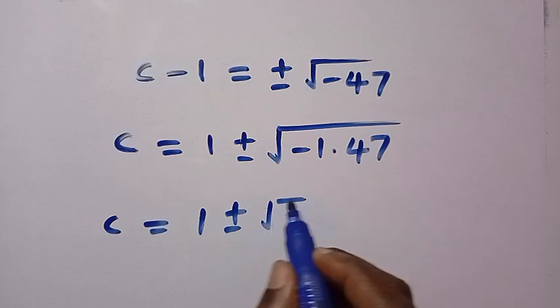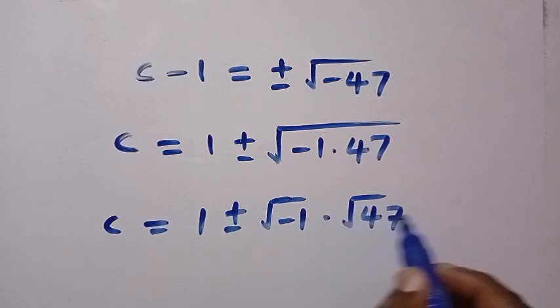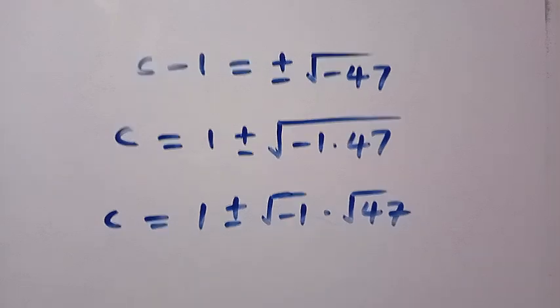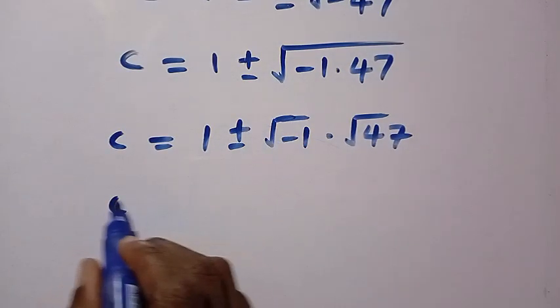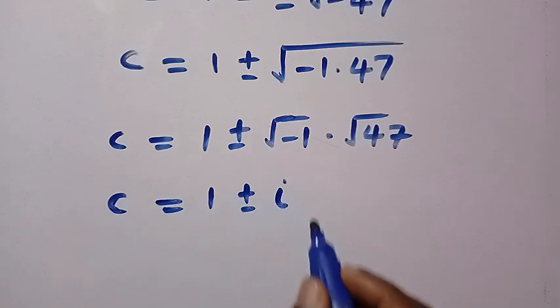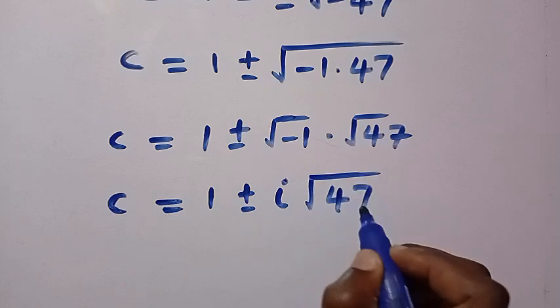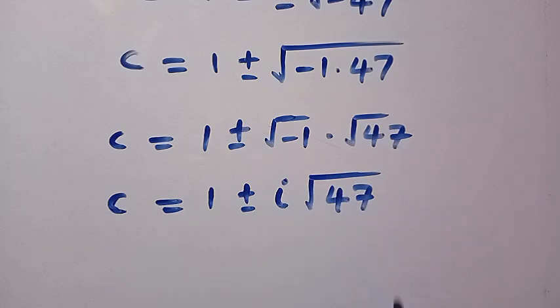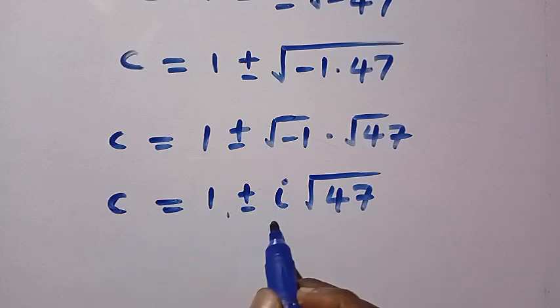So we separate this as square root of minus 1 multiplied by square root of 47. The square root of minus 1 is given as i, so it's an imaginary root. We call it i multiplied by square root of 47. This is an irrational root, so we leave it as C equals 1 plus or minus i square root of 47.